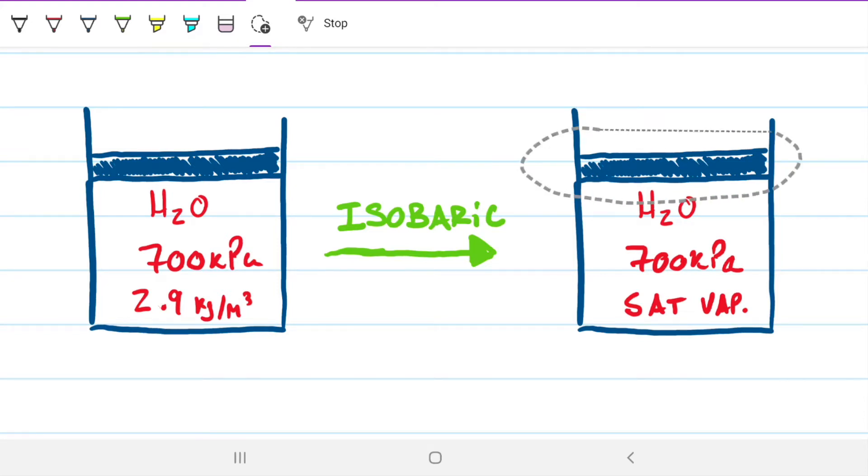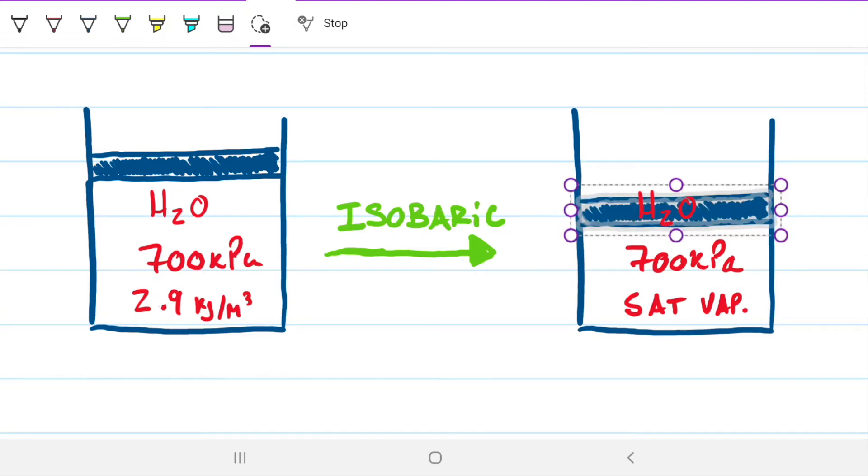In today's problem, we're looking at an isobaric transformation, an isobaric compression where we're going to squish this down, going from a saturated mixture state to a saturated vapor state.